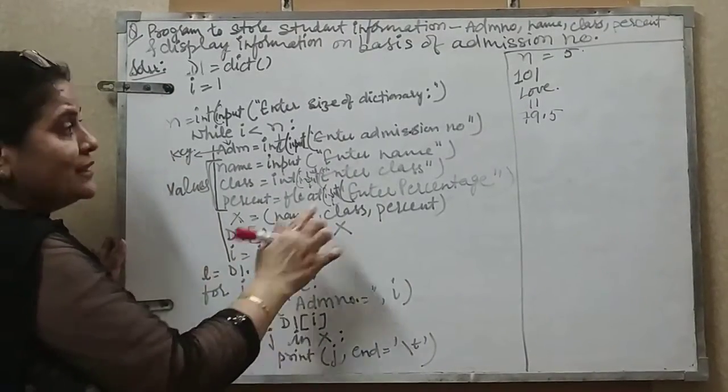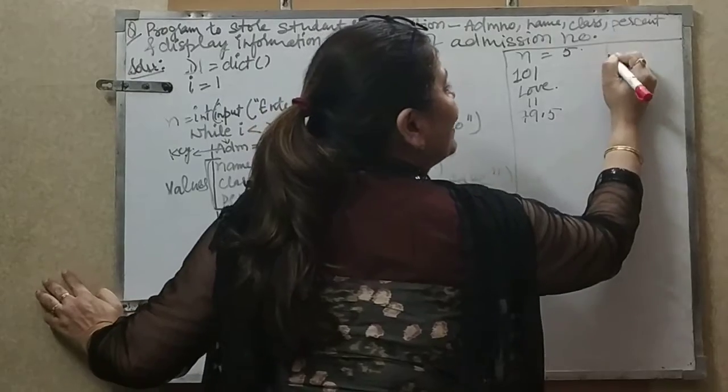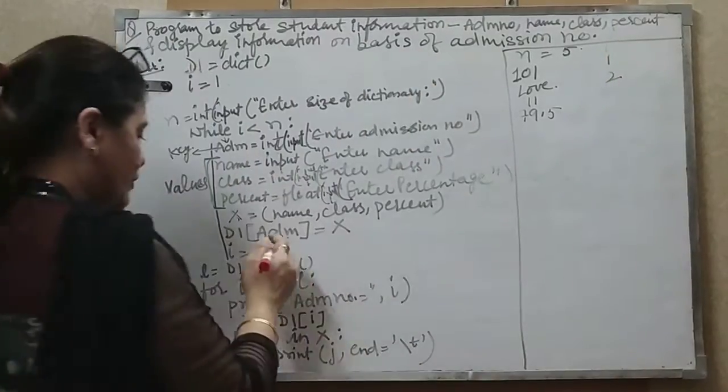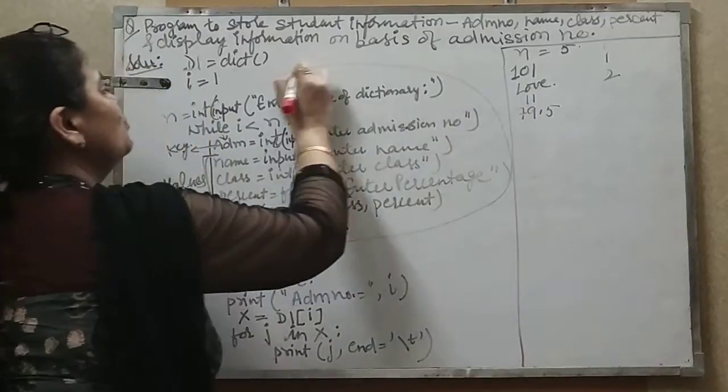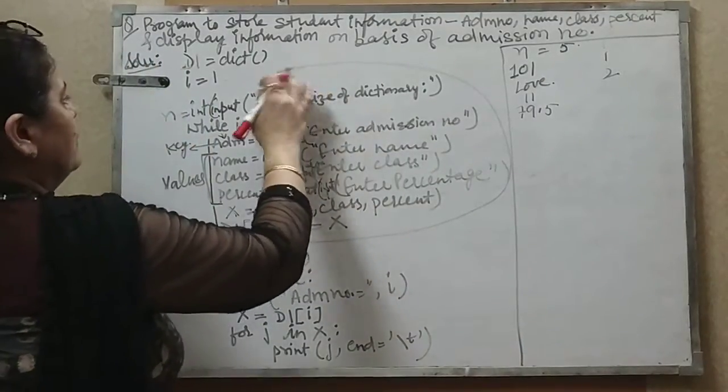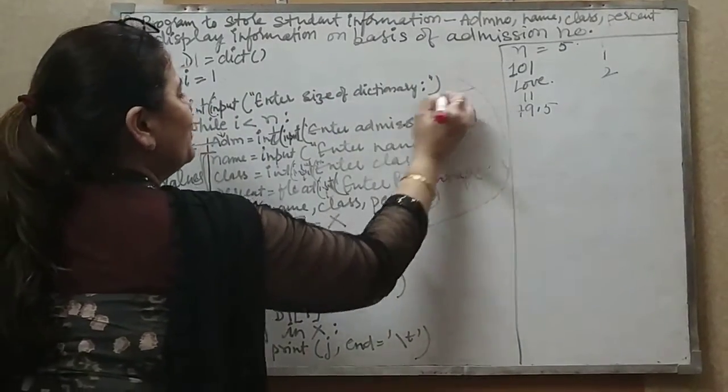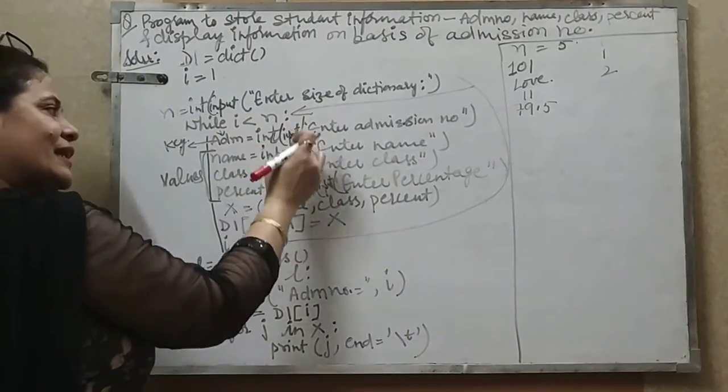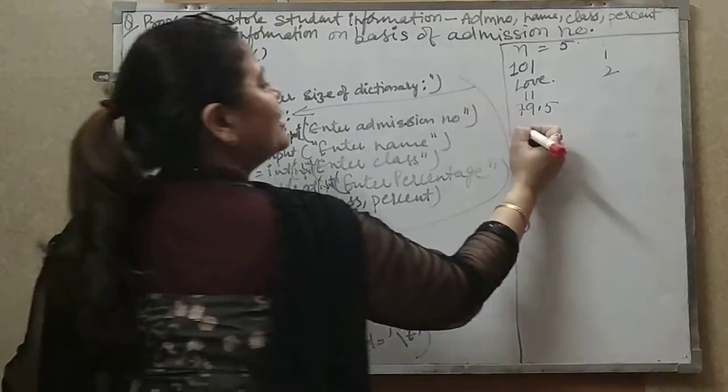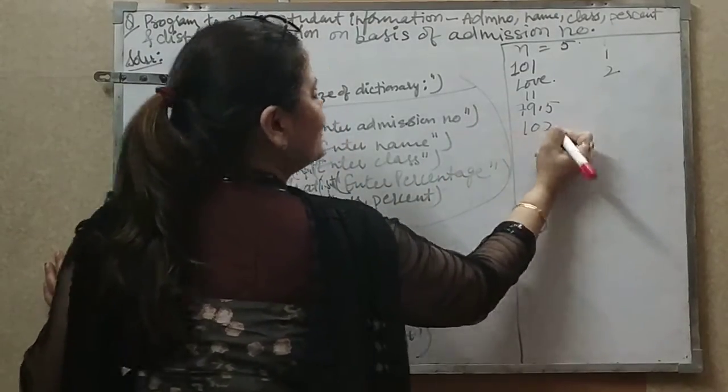Now i equals i plus 1 means the value will increase from 1 to 2. After the value is increased, the loop will go back to the while loop. Now 2 is less than 5, true, again it will ask for the next number. Suppose next admission number I entered is 102.